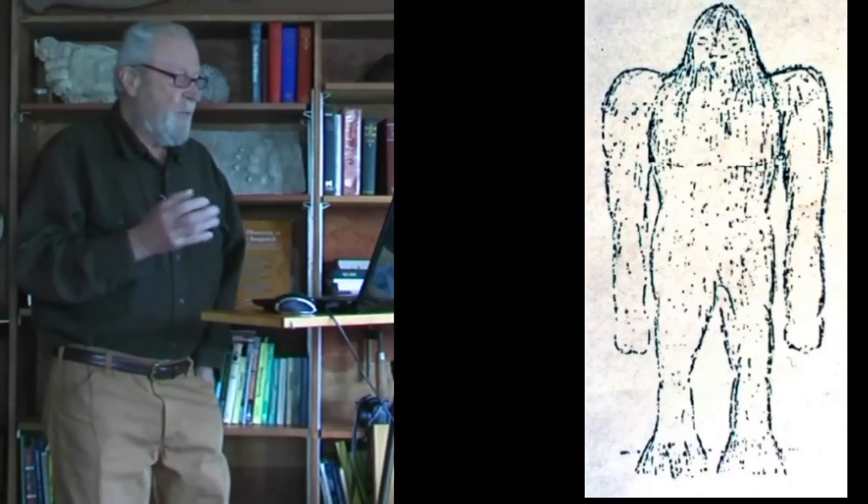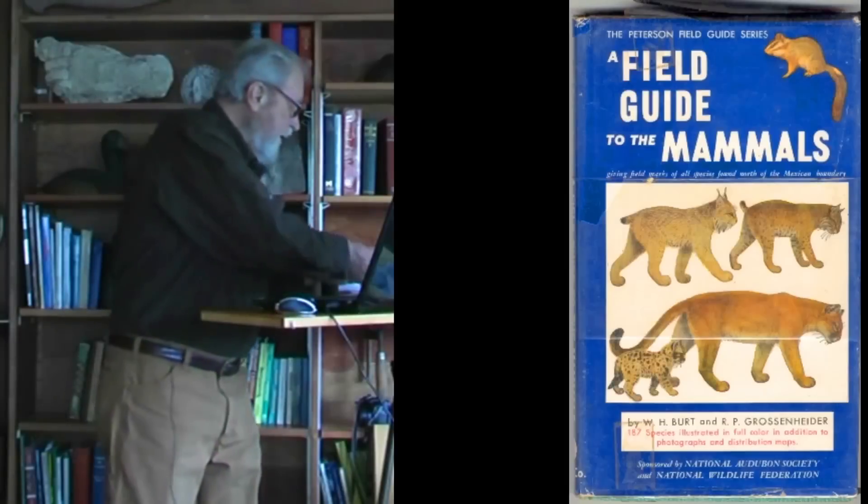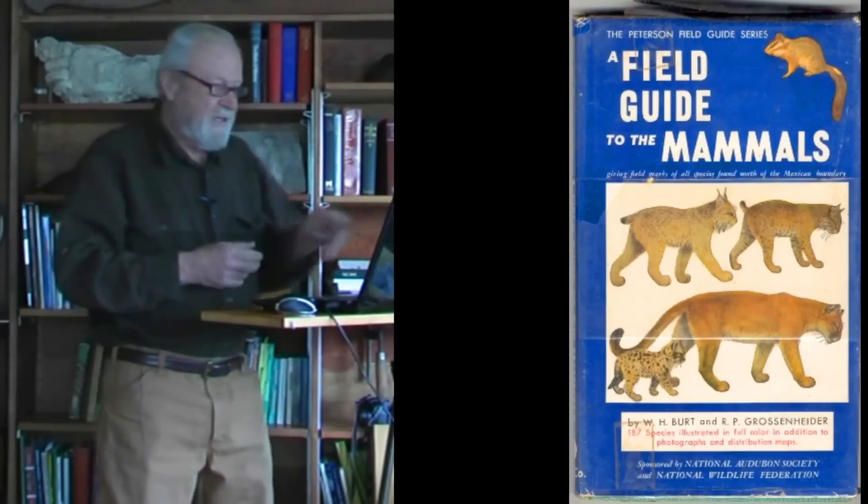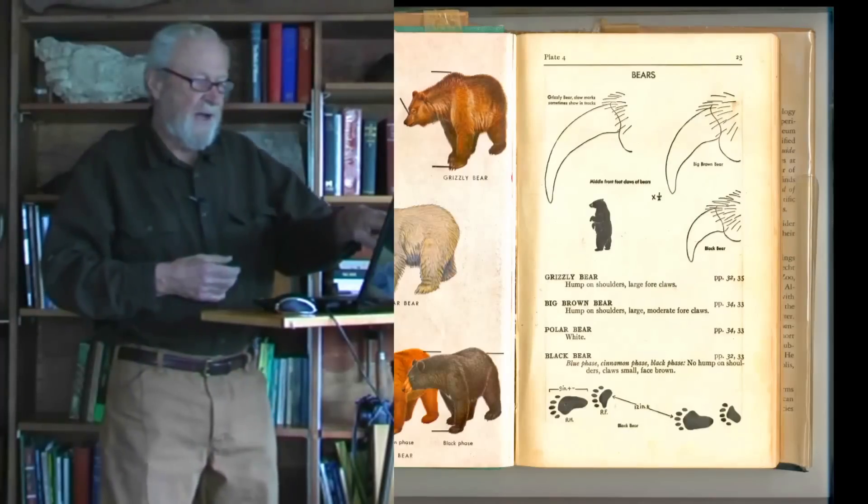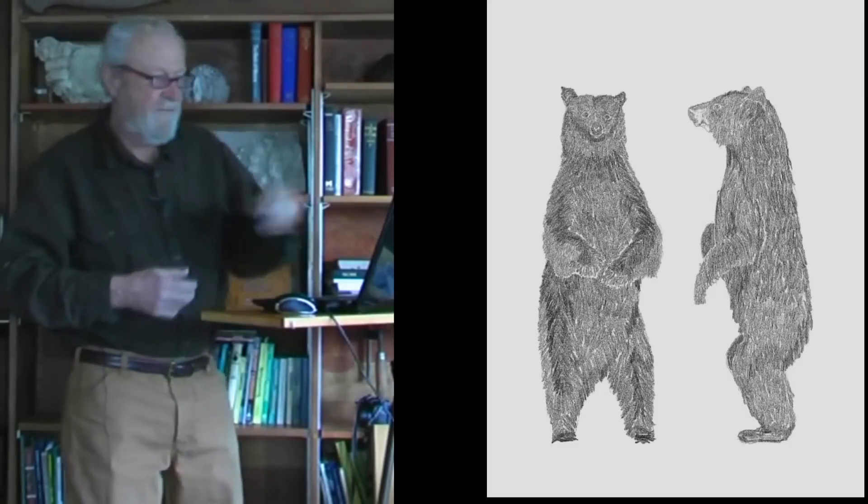Now this raises a problem right at the outset. If you'd seen that, you'd go through a field guide to the mammals looking for a mammal that looks like this. The closest image we'll find is a bear on its hind legs, which could be depicted this way, both front and side view.